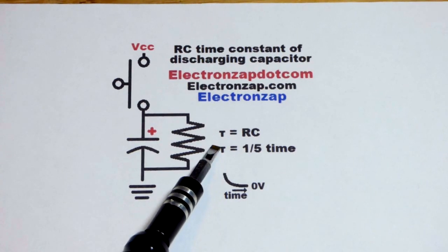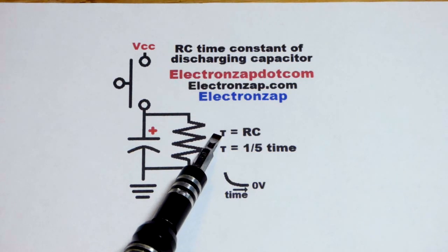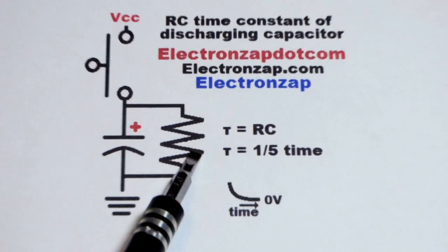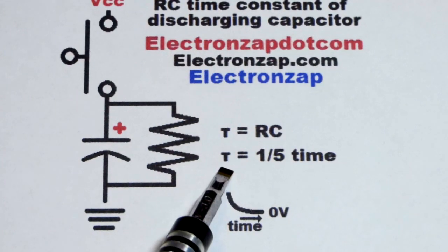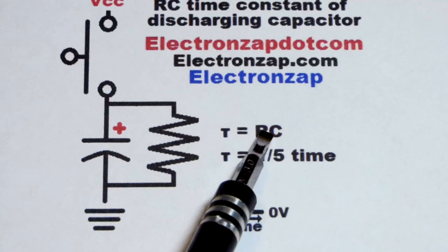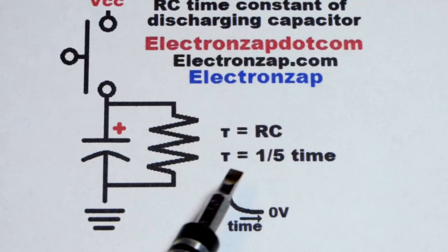I forgot to mention though, this is tau, a Greek letter tau. That stands for time constant in electronics. It looks like it just came out as T. But that's the resistance in ohms times the capacitance in farads.